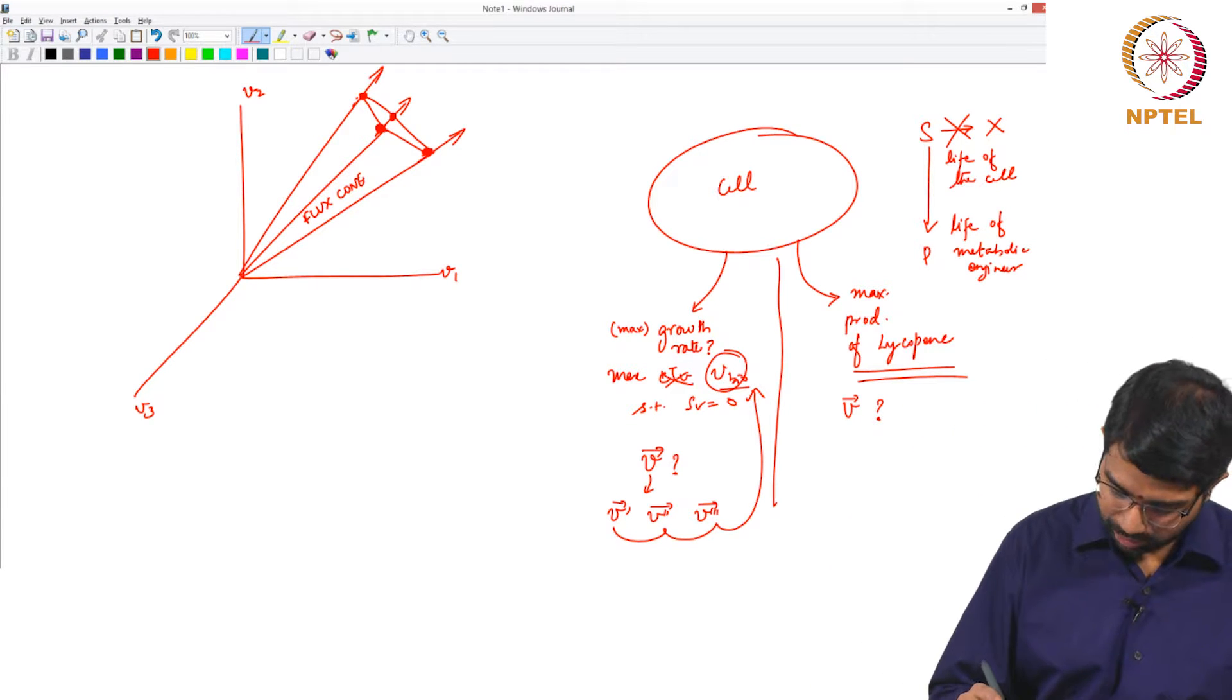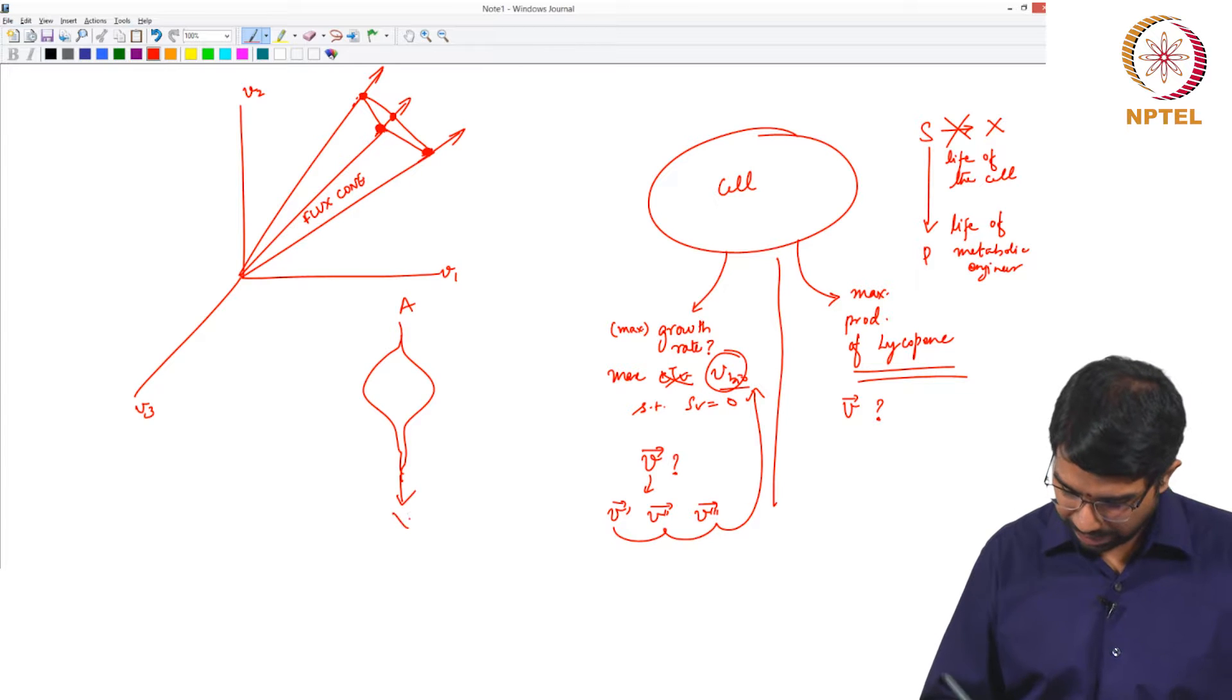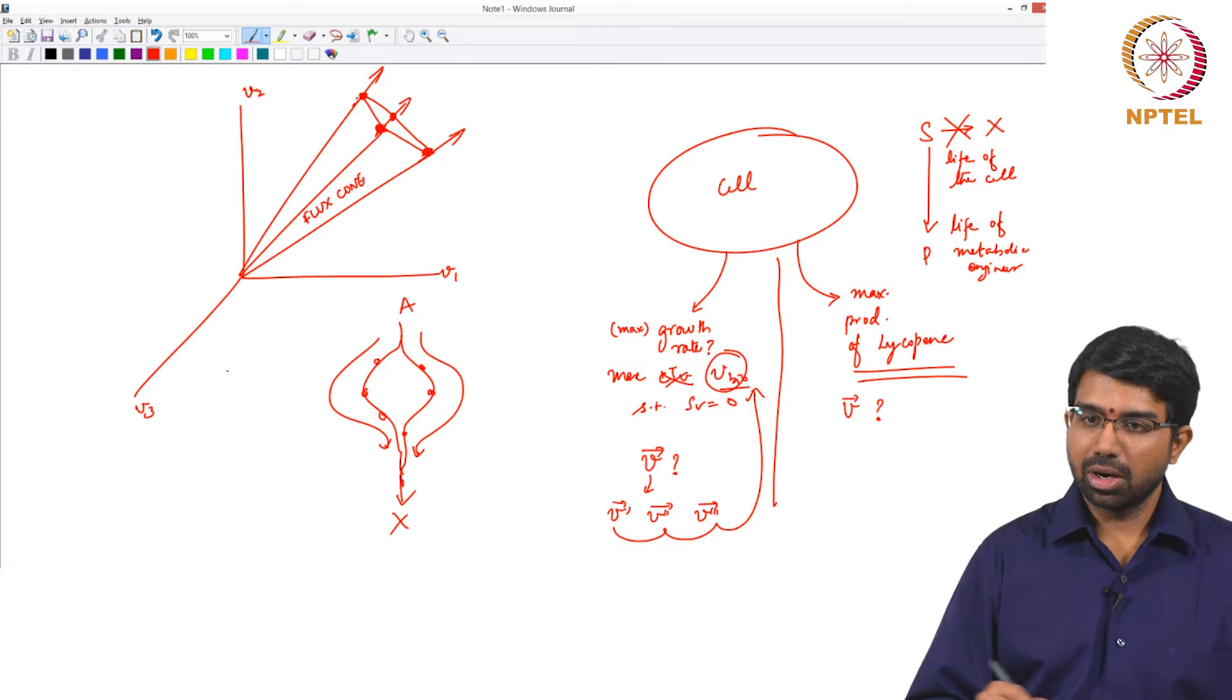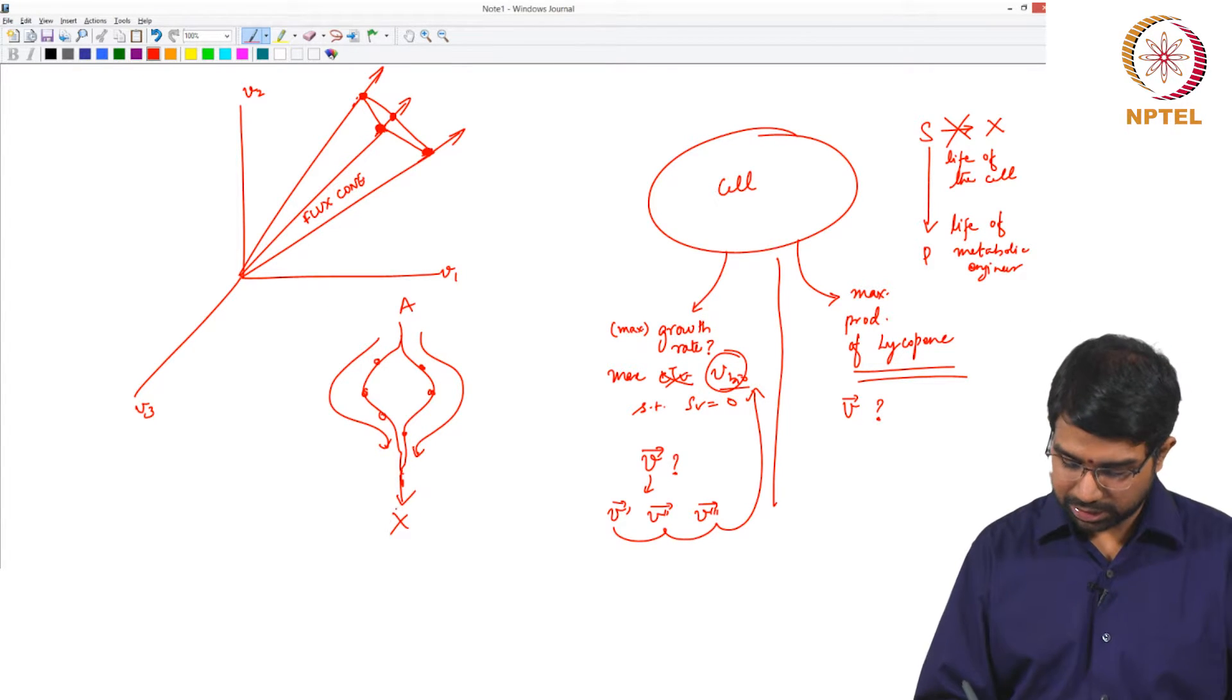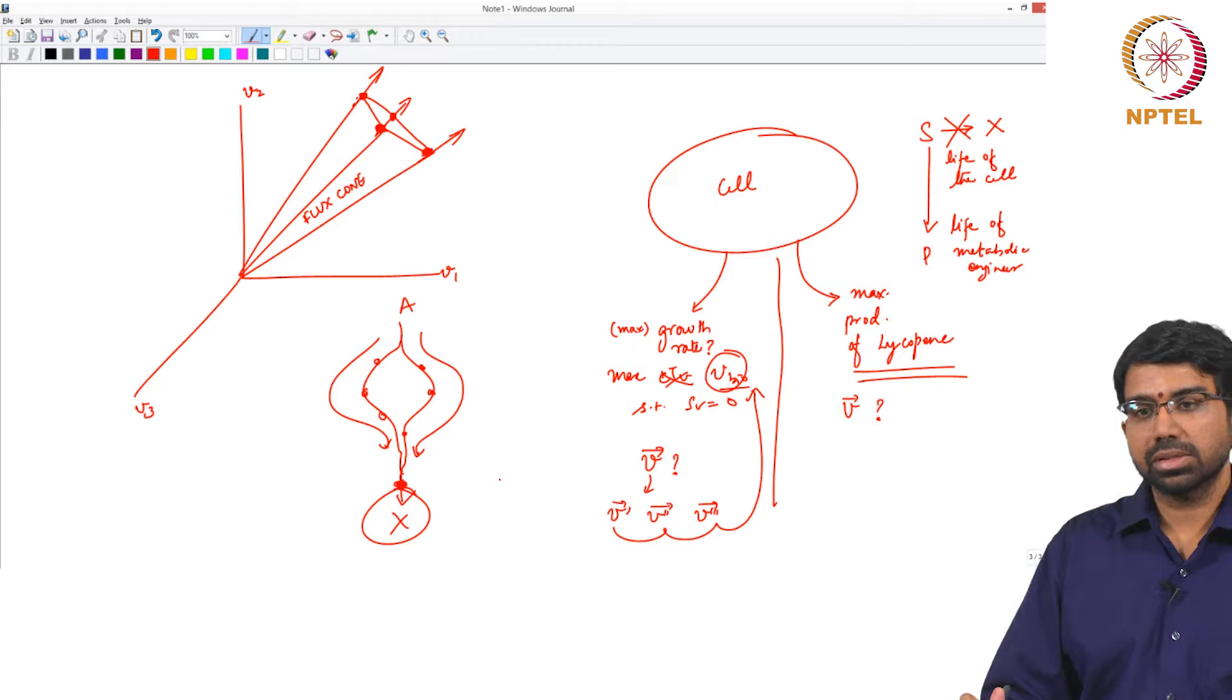So they can compensate. A very simple example would be, let us say you have A to X, this is one pathway, this is one pathway. So all the flux can go like this, all the flux can go like this or some fraction can go in either way and you can still get the same output. So you can have different values for the flux distribution, different flux distribution that compute the same growth rate in practice. Does that make sense?